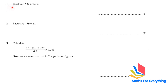The first question: work out 5% of 25. Whenever a percentage is given we divide by 100, so 5 over 100 — 'of' means multiply — of 25. This gives you 1.25.